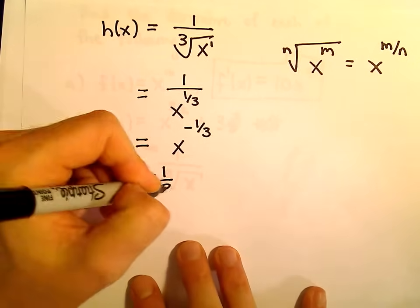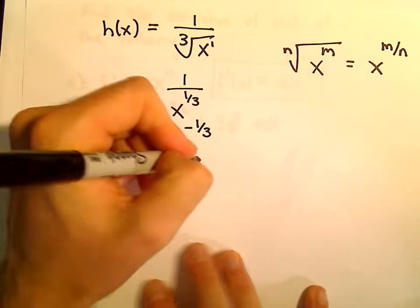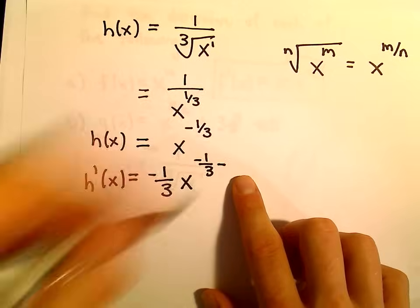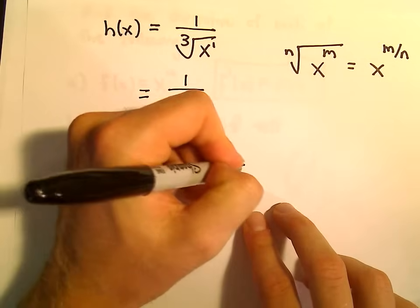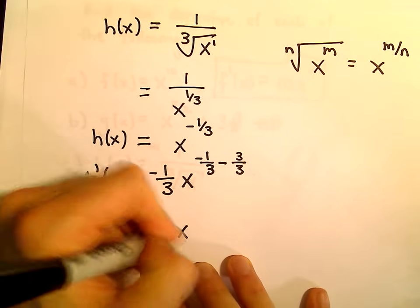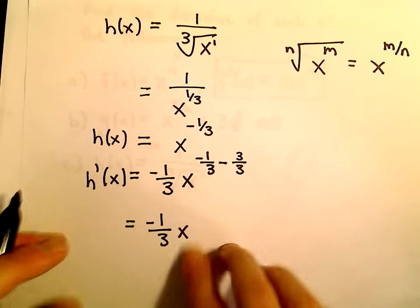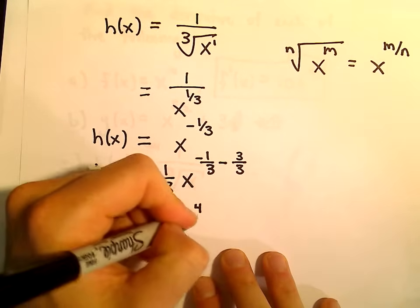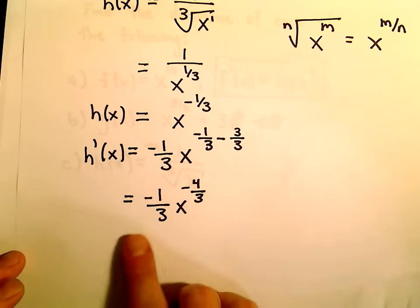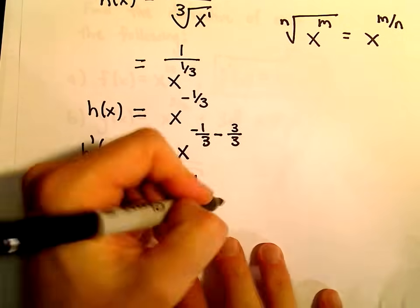So the negative 1 3rd comes right out front. And then we would have negative 1 3rd, and we would subtract 1. But I can write 1 as 3 over 3 to get common denominators. So we would have negative 1 over 3 x. Well, negative 1 minus 3 will give us negative 4 over 3. And this is now our derivative. It says it would be negative 1 3rd x to the negative 4 3rds.